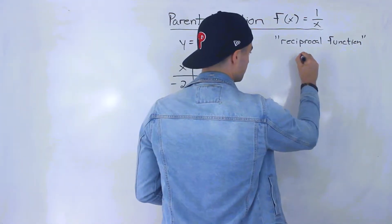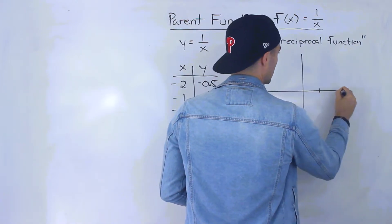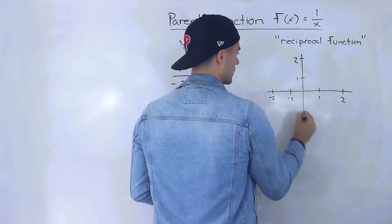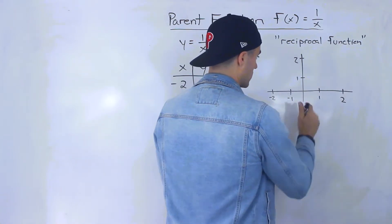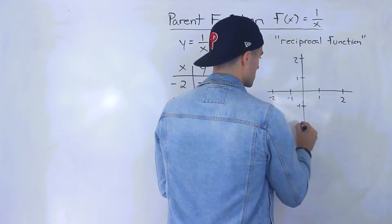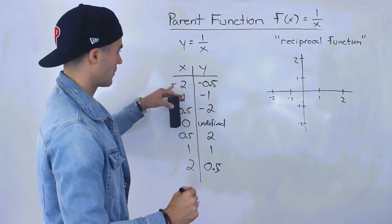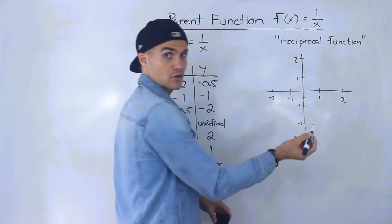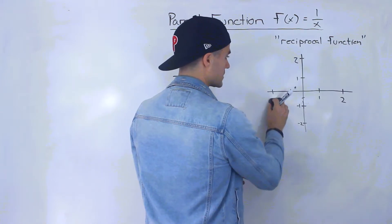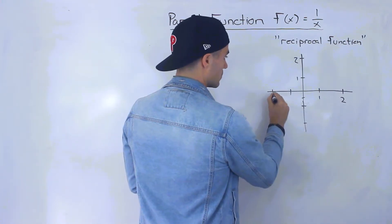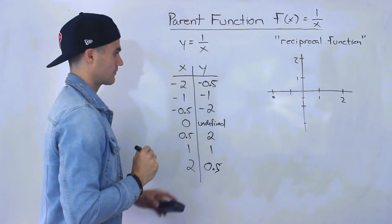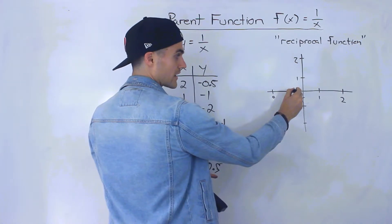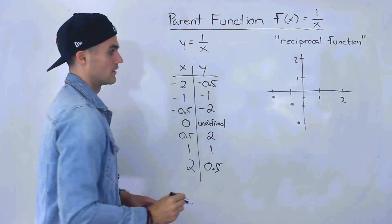So let's graph these points. We'll go through them one by one. We got negative 2 and negative 0.5 — the x value of negative 2, the y value negative 0.5. Then negative 1, negative 1. Then negative 0.5, negative 2 — so negative 0.5 is the x value and negative 2 is the y value.